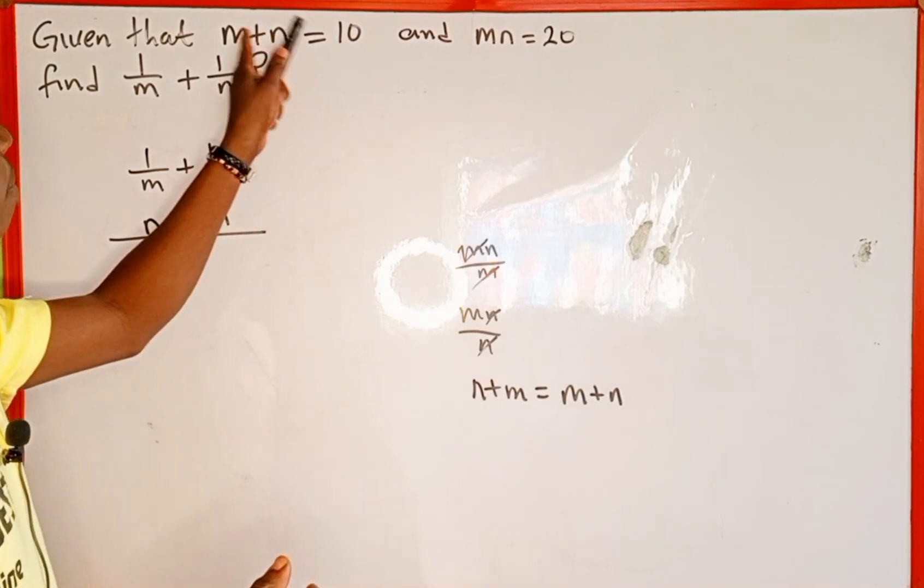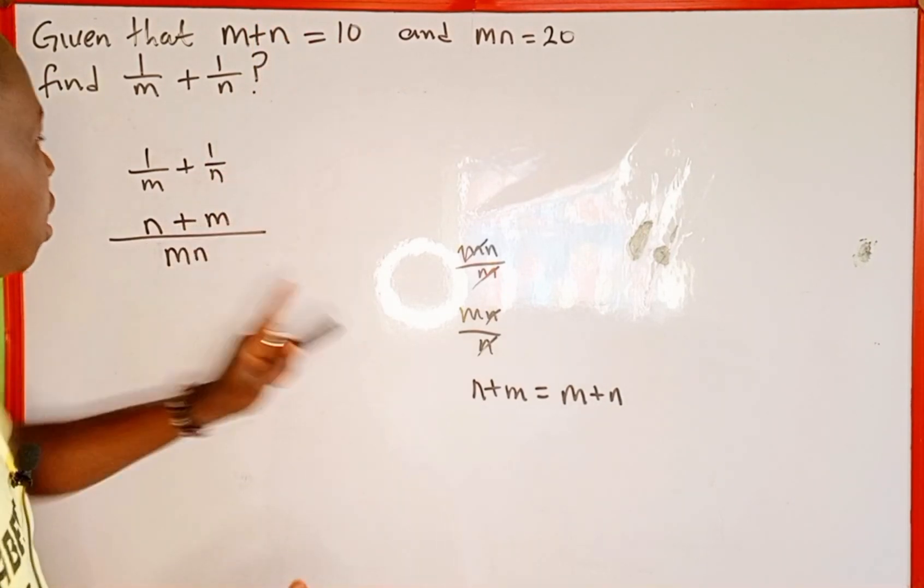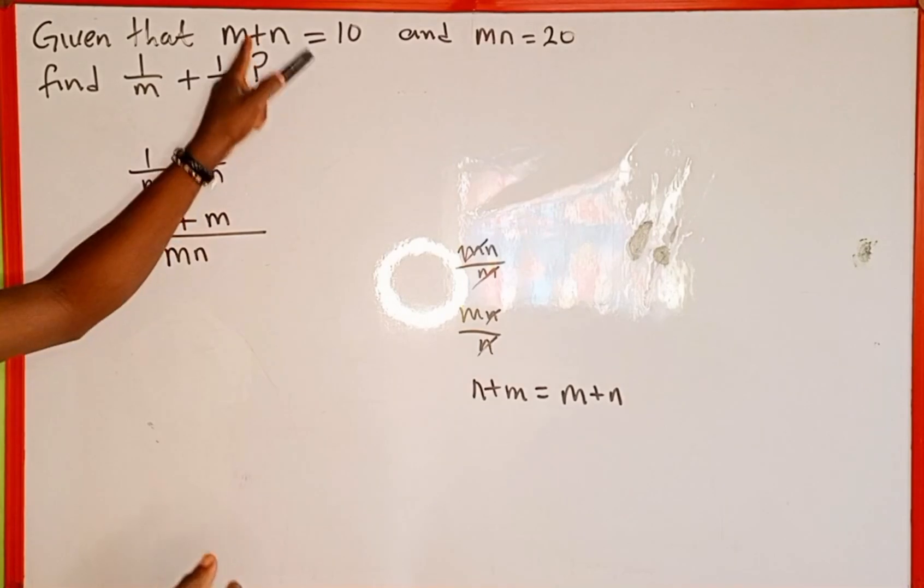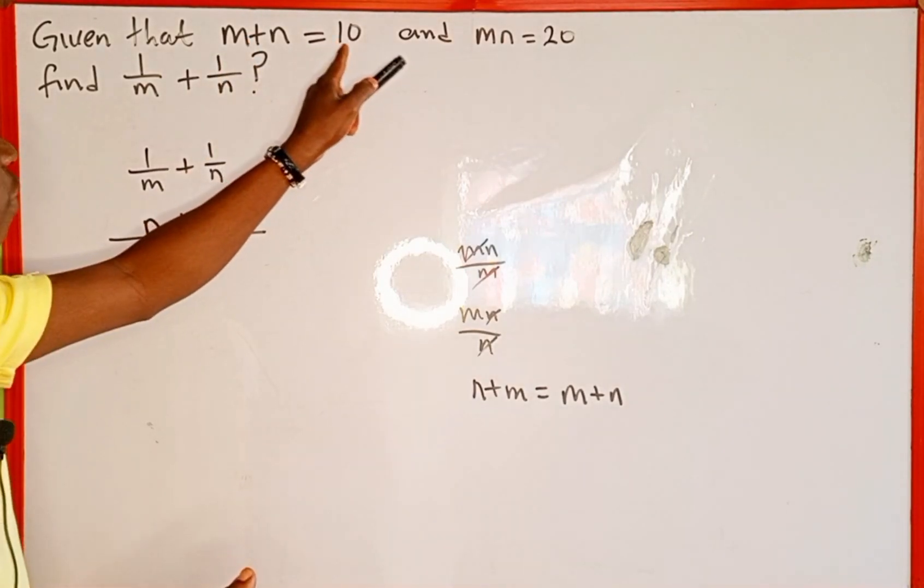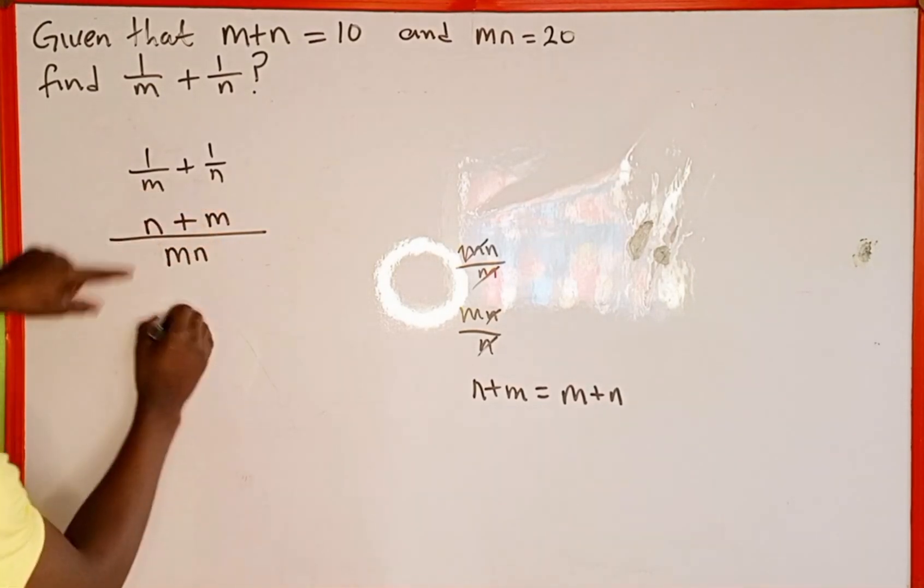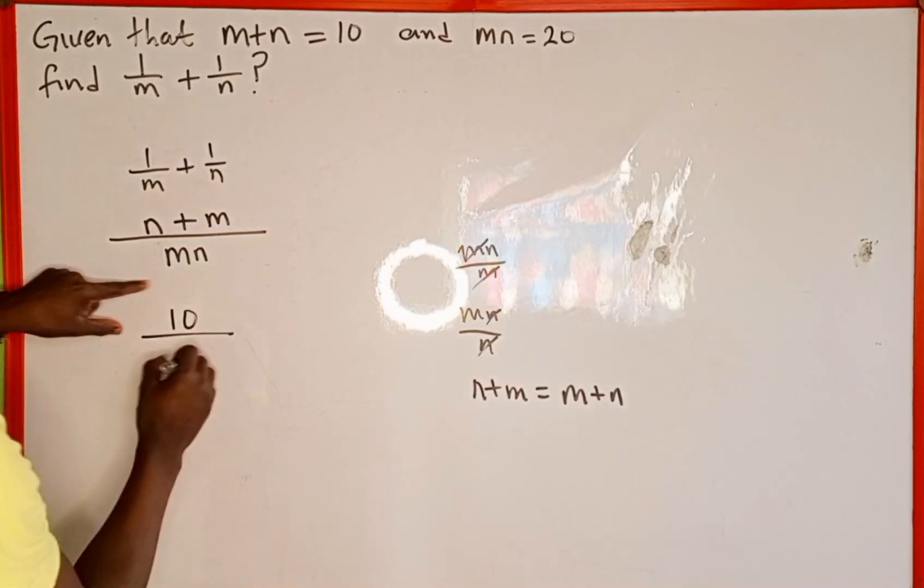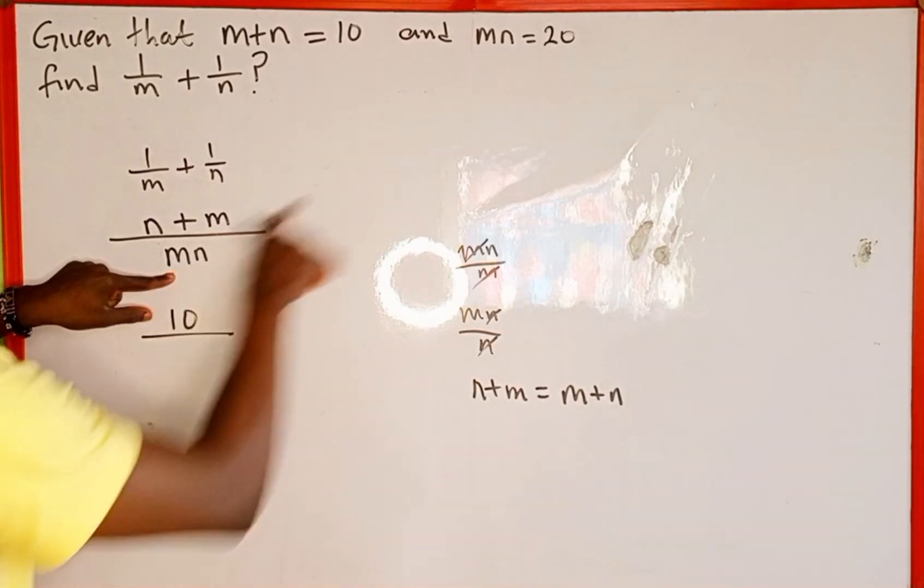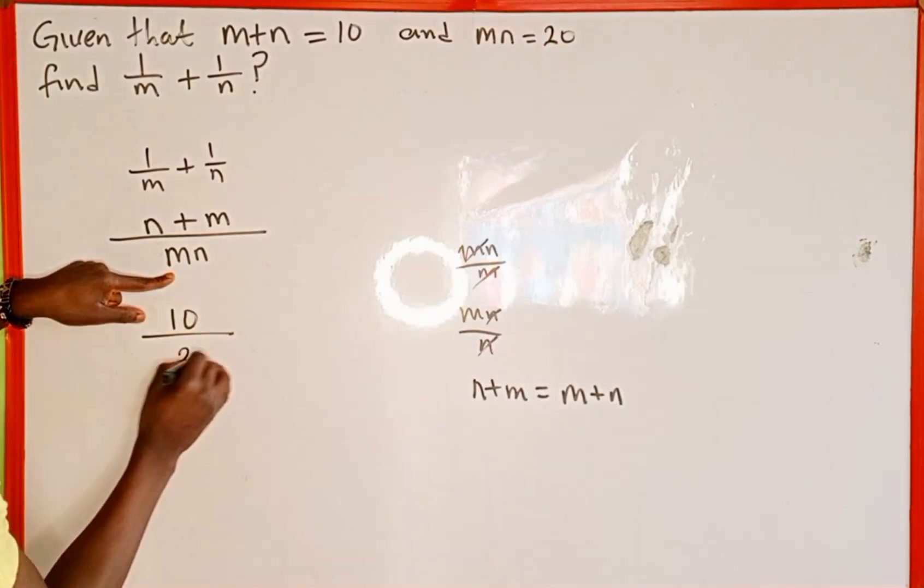We're given m plus n equals 10, and we have n plus m here, so this is the same—the value is 10. In place of n plus m we put 10, over m times n. In place of m times n we put 20.